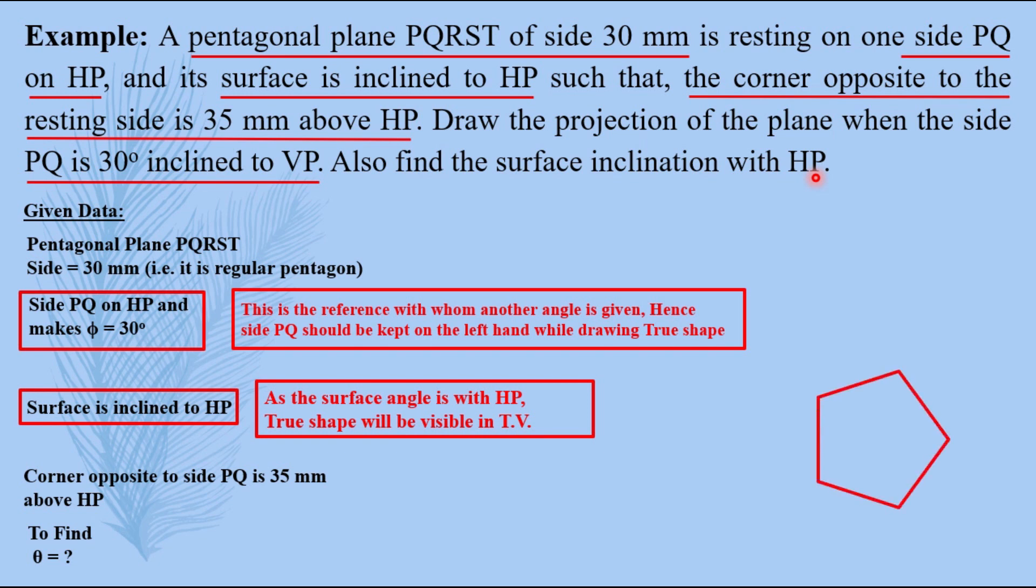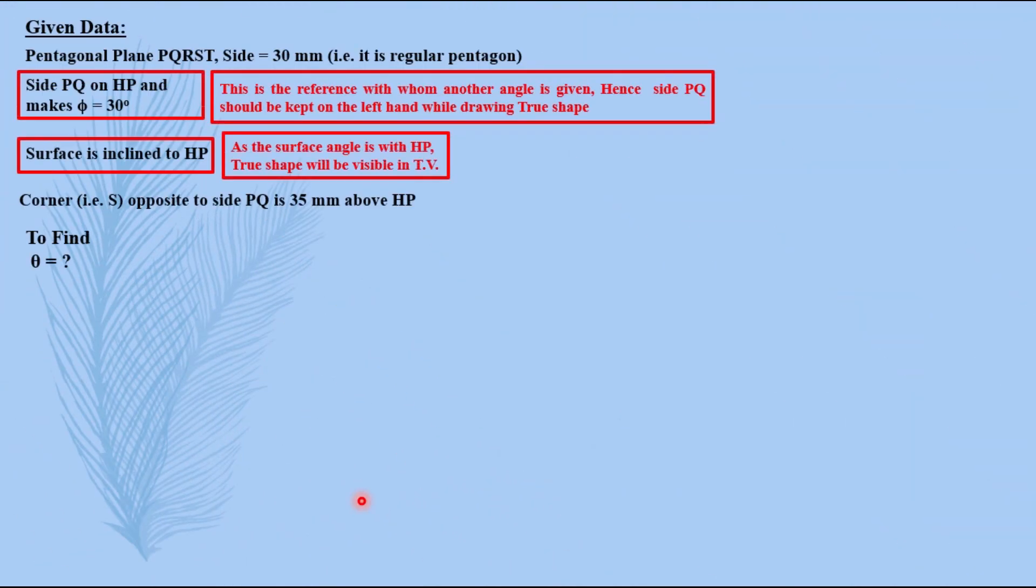Now this is the pentagonal plane according to this condition and this as a top view we have this as the diagram, that is our first true shape and it will be seen in top view. If I name it PQRST or if you go clockwise starting from here PQRST, in both cases the corner opposite to side PQ will be S. Here the corner opposite to side PQ will be S. Now, this is the given data. Let us draw the actual 2D solution now.